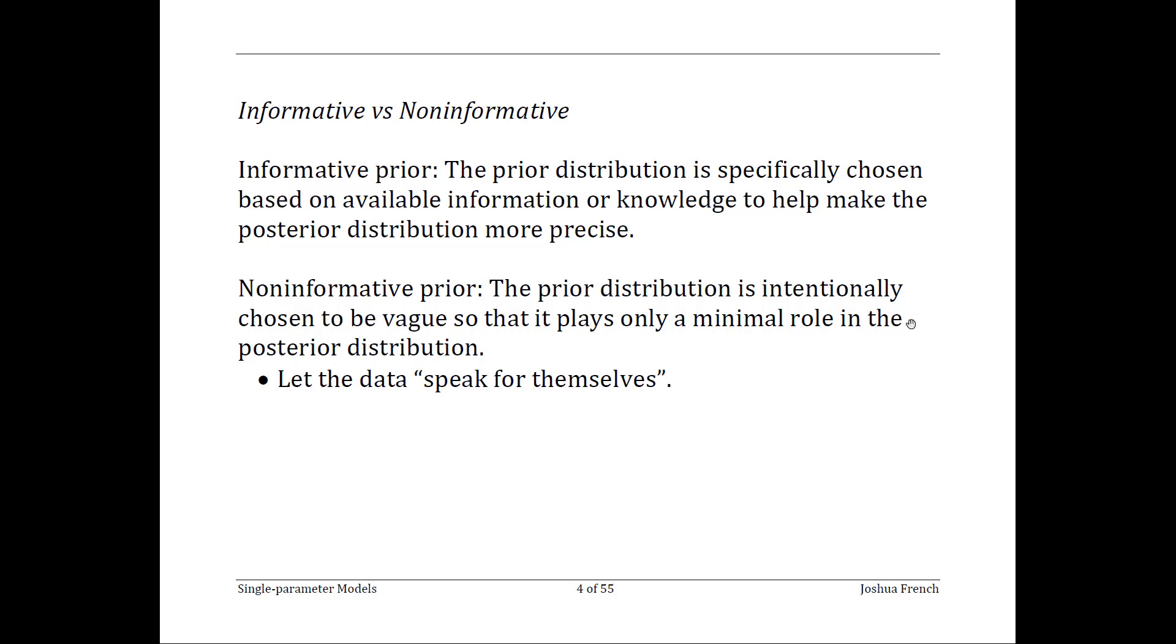A non-informative prior attempts to be intentionally vague so that the prior's impact on the posterior is minimal. It's similar in spirit to an objective prior, but it is probably not going to be chosen systematically. For a non-informative prior, the goal is to essentially let the data have the most say in determining the posterior distribution.